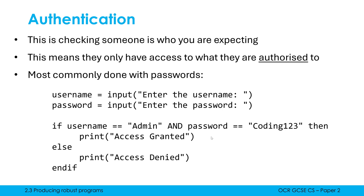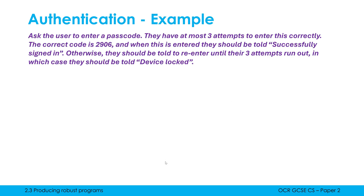This code requires the username to be 'admin' and the password to be 'coding123'. Anything else will say 'access denied' and the user can't proceed. But as you'll know from experience, a lot of the time you get more than one chance — you might get unlimited chances or, in this particular question, three chances. So it's still authentication because only one person should know their passcode.